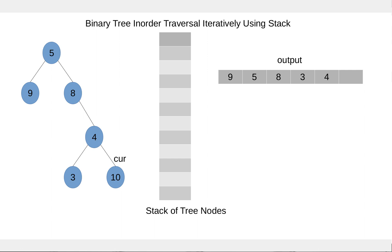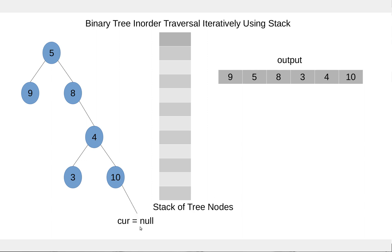Node 30 is also null so we pop the node from the stack, process node 4, and then move to the right child of 4. Current is pointing to 10 which is not null, so we'll add it to the stack and move to the left child. Left child is null so we'll pop the node from the stack, process this node and add it to the output, then move to the right child. Current is null and we don't have any nodes in the stack, so this is the end of in-order traversal.